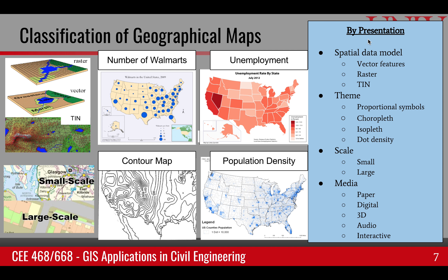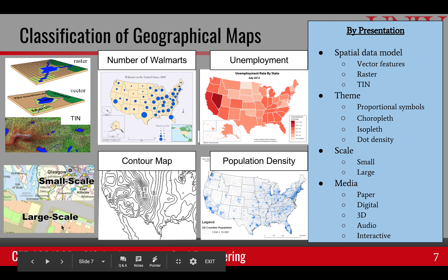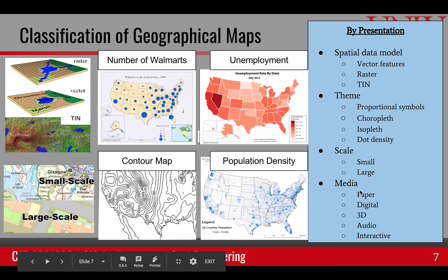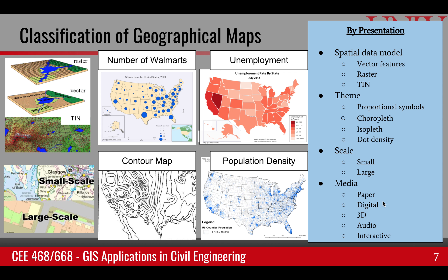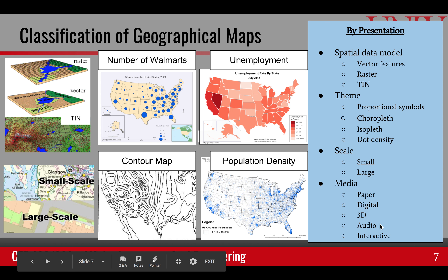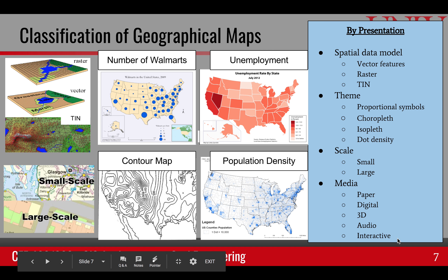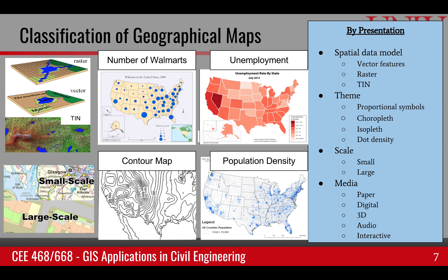Another type of presentation is by scale: small-scale maps have less detail, while large-scale maps have more detail and are like zoomed-in versions. Another type of presentation is the media used — for example, paper or digital media, 3D media. In present-day navigation systems, audio media also conveys map information, and there are even interactive maps where you can, for example, find a coffee shop close to you. That covers the classification of geographical maps.